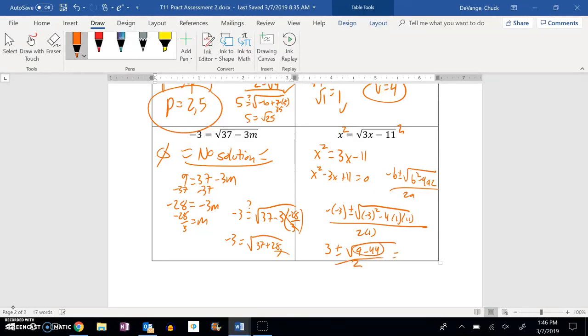Notice 9 minus 44, that's going to be a negative number. Square root of a negative number isn't going to happen. Not with a real answer. So, the answer to this is no solution.